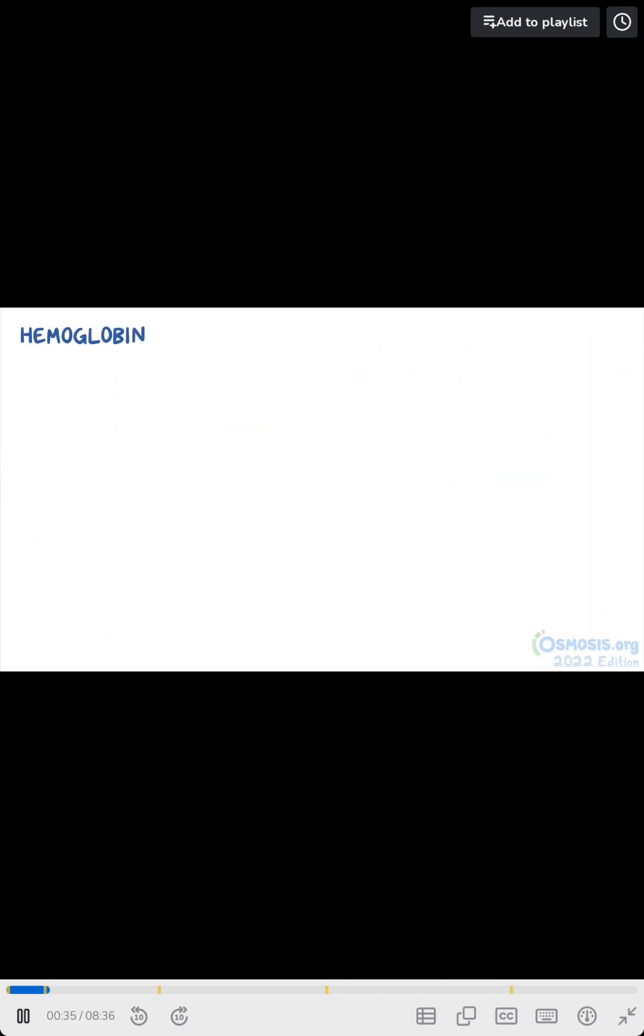Now hemoglobin, abbreviated as HBG or HB, and hematocrit, abbreviated as HCT or sometimes CRIT, are usually measured as part of a CBC, and they provide an indirect way to measure red blood cells, or RBCs.